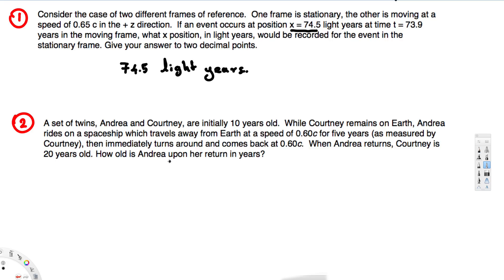This question asks: A set of twins, Andrea and Courtney, are initially 10 years old. While Courtney remains on Earth, Andrea rides on a spaceship which travels away from Earth at a speed of 0.6c for 5 years as measured by Courtney, then immediately turns around and comes back at 0.6c. When Andrea returns, Courtney is 20 years old. How old is Andrea upon her return?